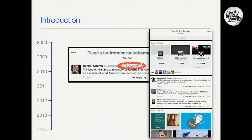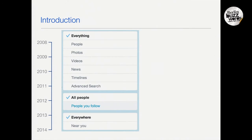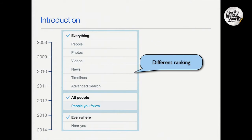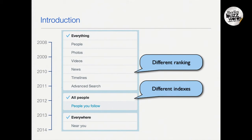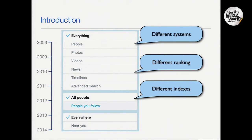We also added what we call universal search — more result types. Now if you search on Twitter you get top user accounts, tweets, photos, Vines, and videos. You can see different rankings on the search page: photo search, video search, news search. We have different search indexes — for example for your social graph so we can return tweets from people you follow. There are different search systems for tweets and users.